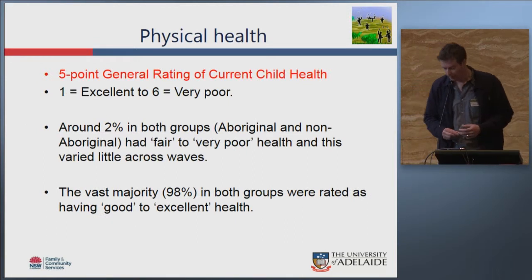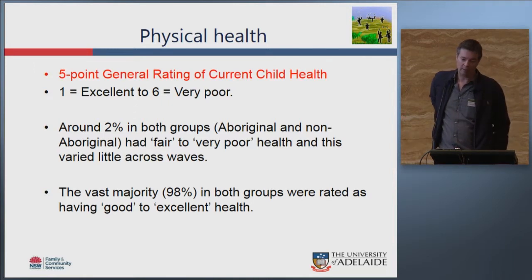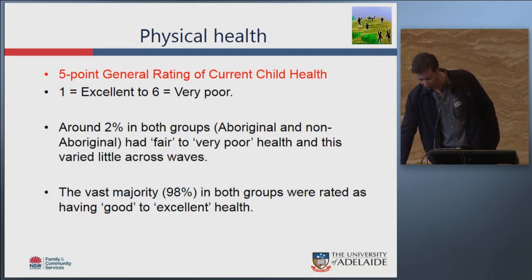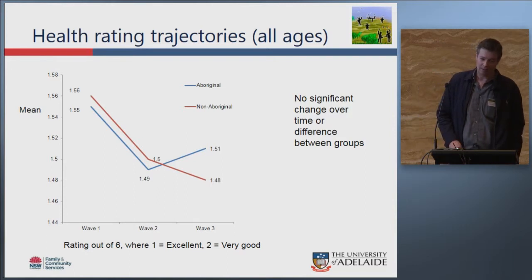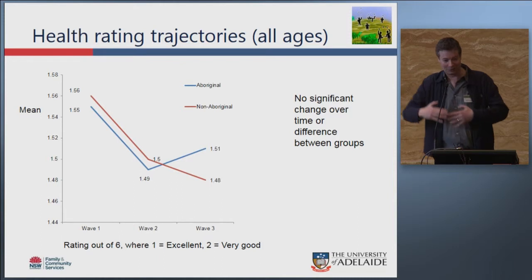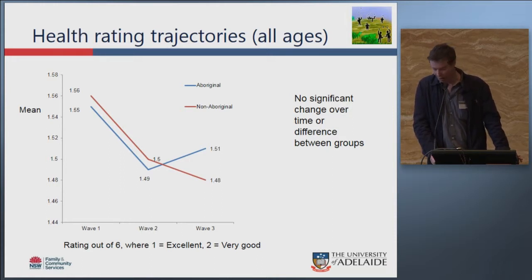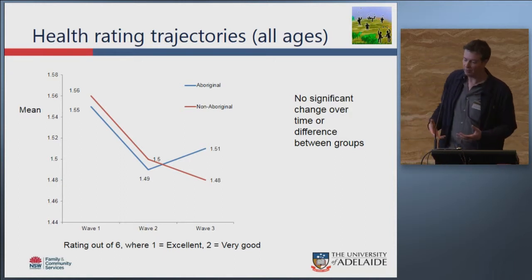On physical health: 98 percent of children are doing very well — rated as excellent or very good by carers — with only two percent in poor to very poor health. There is no difference between Aboriginal and non-Aboriginal children in their physical health as rated by carers, and despite a slight downward trajectory, there is no significant change in physical health from wave one to wave three.